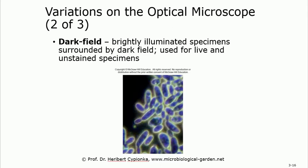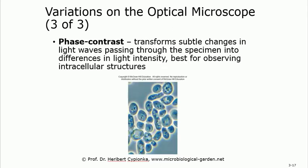The second variation is the dark field. In dark field, the surrounding is dark — basically black — and the specimen appears bright. This is used for live specimens only, not fixed. The third is phase contrast, which transforms subtle changes in light waves passing through the specimen into differences in light density. Phase contrast is most important for viewing internal structures like the Golgi apparatus or mitochondria.